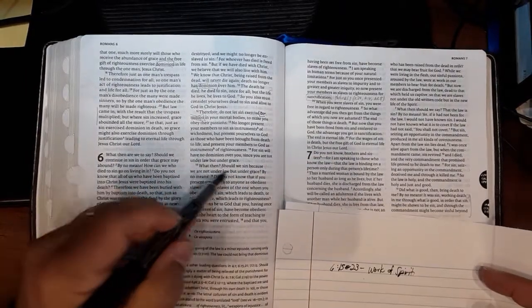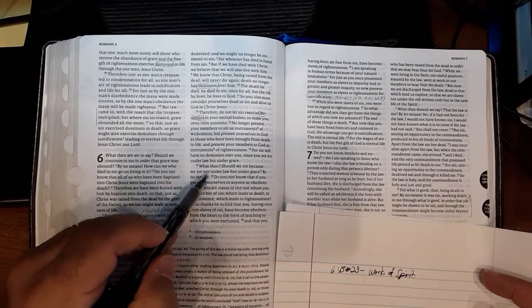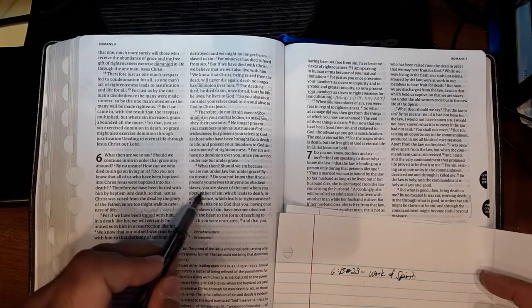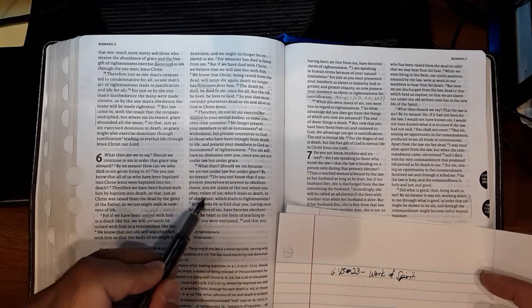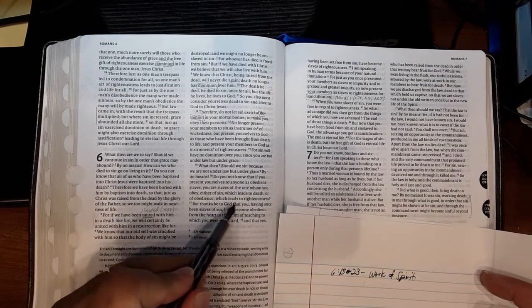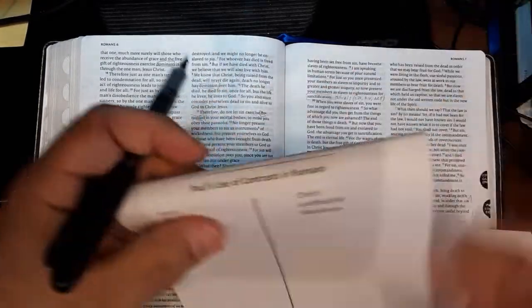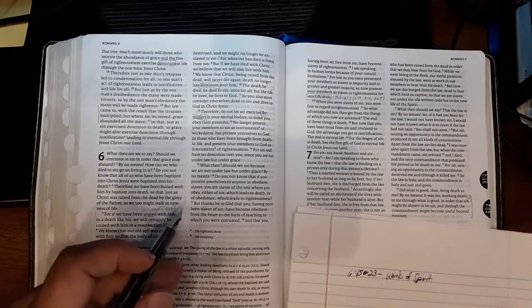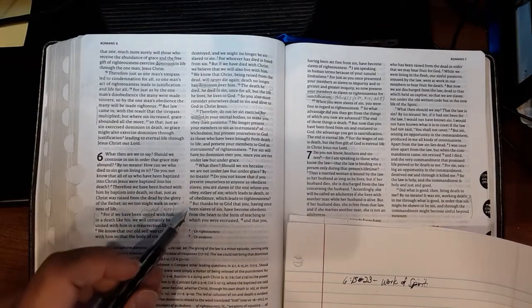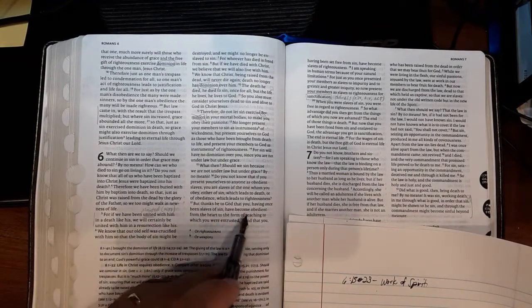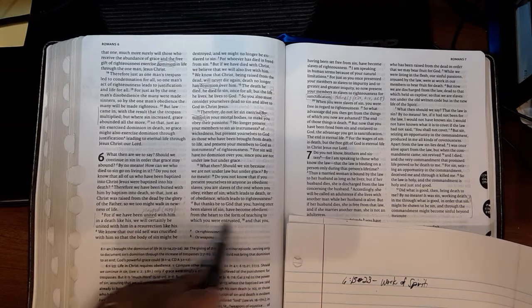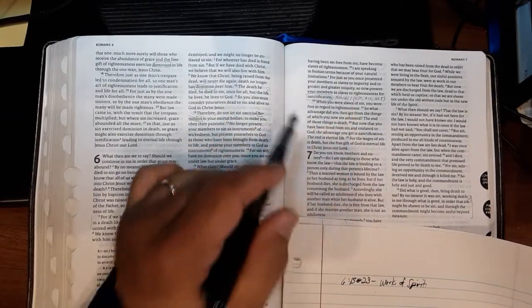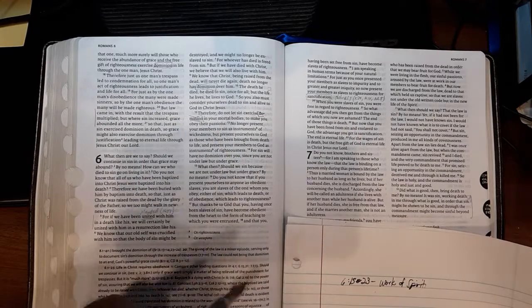So let's go ahead and read it. What then? Should we sin because we are not under law, but under grace? By no means. Do you not know that if you present yourselves to anyone as obedient slaves, you are slaves of the one whom you obey, either of sin, which leads to death, or of obedience, which leads to righteousness. By the way, if you're still keeping that list, you can see I put disobedience and obedience, another contrast. But thanks be to God that you having once been slaves of sin have become obedient from the heart to the form of teaching to which you were entrusted, and that you having been set free from sin have become slaves of righteousness. Remember Paul calls himself in chapter one, verse one, a slave of God.